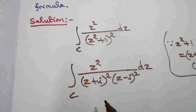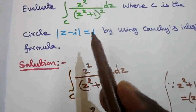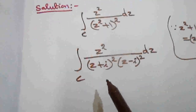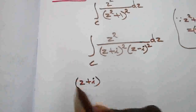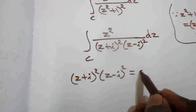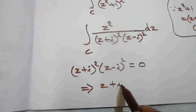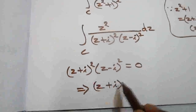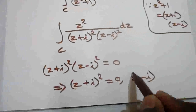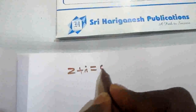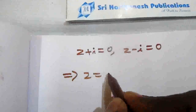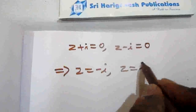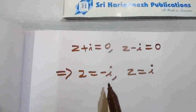The given circle c is |z minus i| = 1. First, find the singular points by equating the denominator to zero: (z plus i) squared times (z minus i) squared = 0, which gives z plus i = 0 and z minus i = 0. Therefore z = minus i and z = plus i are the two singular points.